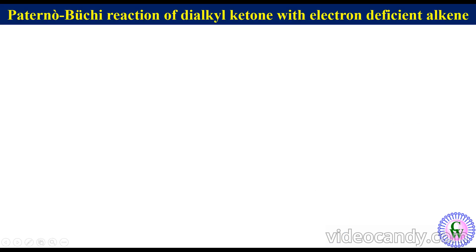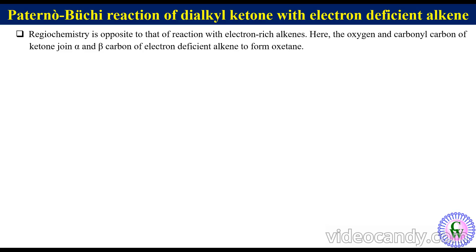Paternò-Bùchi reaction of dialkyl ketones with electron-deficient alkenes: in this case the regioselectivity is opposite to that of the reaction with electron-rich alkenes. Here, the oxygen and carbonyl carbon of the ketone respectively join the alpha and beta carbons of the electron-deficient alkene to form oxetane. The reaction is stereospecific and stereoselective, meaning the stereochemistry of the alkene remains unchanged — groups which are cis in the alkene remain cis in the oxetane, while groups trans in the alkene remain trans.